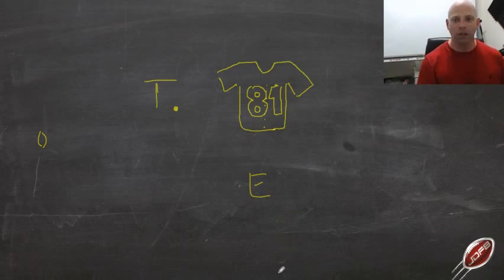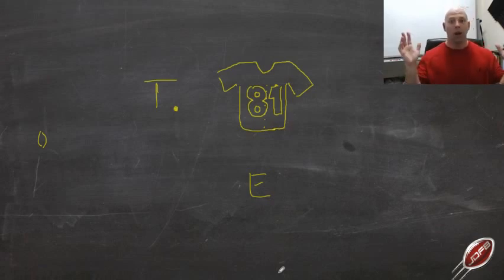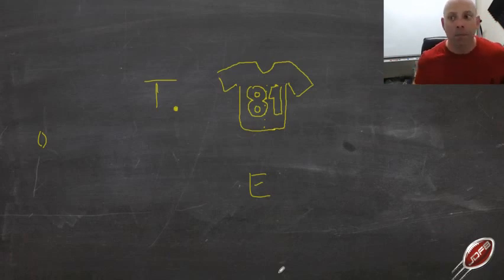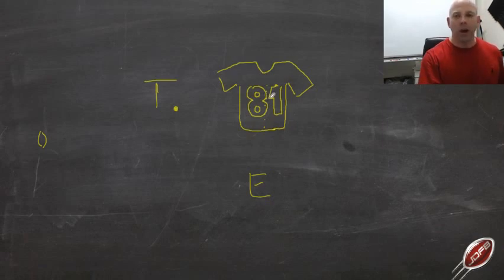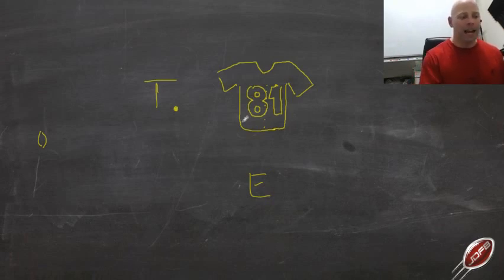Our defensive tackle that always plays in the shade works block to, block away, and pass rush — he's only got three things. That's why the six-tech is harder; the six-tech has five. But we're not wildly complicating football. Overcomplicating is how you get really slow players out there. The strike point is not the middle of the breastplate — it's the inside half or even the inside corner of the inside number.